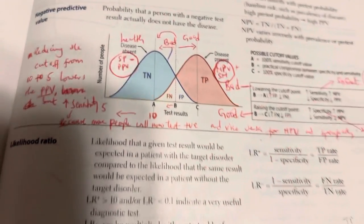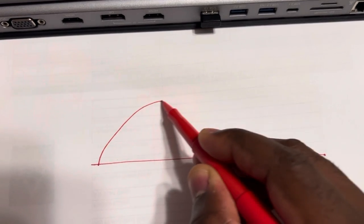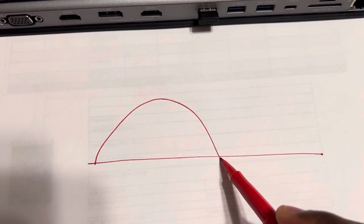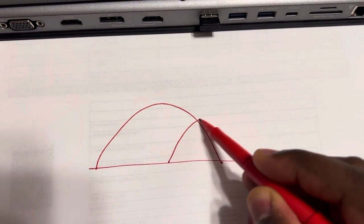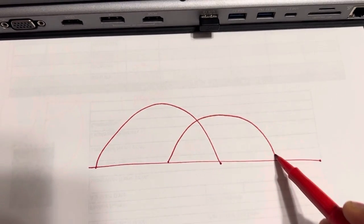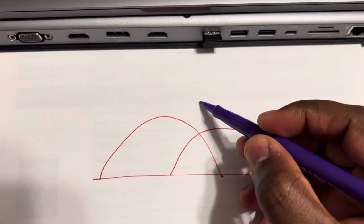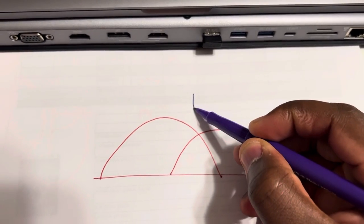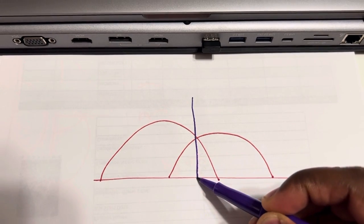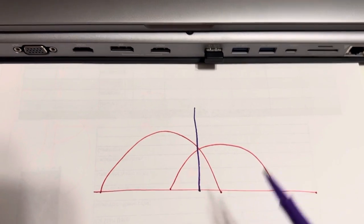Let's go to the board. I draw this line like this — just learn how to draw this by yourself. After drawing this, I will put the cutoff over here in the middle, just as we have in the book.